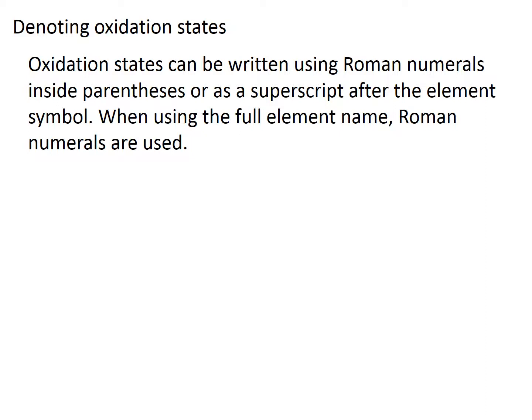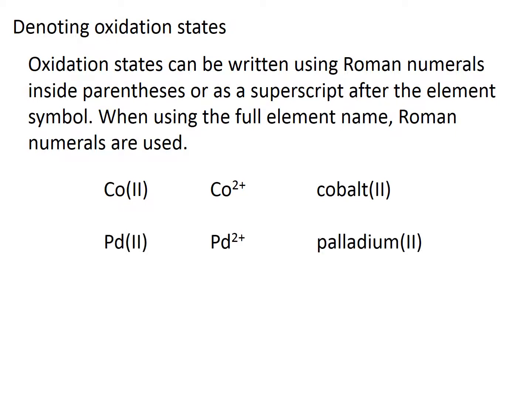Oxidation states can be written either using Roman numerals inside parentheses, or as a superscript after the element symbol. But when we use the full element name, Roman numerals are used. So let's look at our three examples. Cobalt was in a 2+ oxidation state, and so it can be written in one of these three forms. Notice that when we use the full word cobalt, we only give it in terms of Roman numerals. Also notice that there is no space between the element name or element symbol and the parentheses. We calculated that palladium had an oxidation state of 2+, and so it can be written in these forms. And finally, we calculated that iron had an oxidation state of 3+, and it can be written like this.